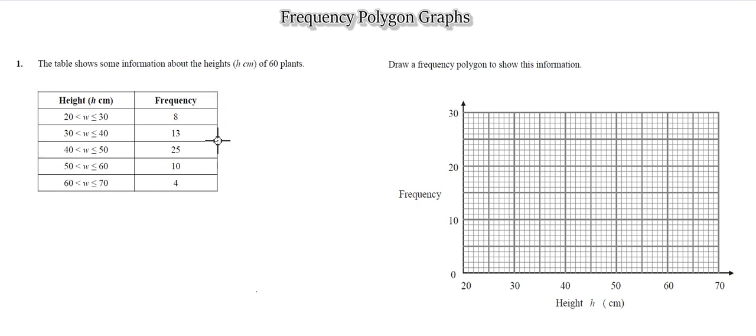This is a table that shows us the height of 60 plants, and we have a graph here in which we'll be drawing our frequency polygon. On the x-axis we have the height of the plants, and on the y-axis we have the frequency, the number of plants. The height of the plants from 20 centimeters to 30 centimeters has a frequency of 8.